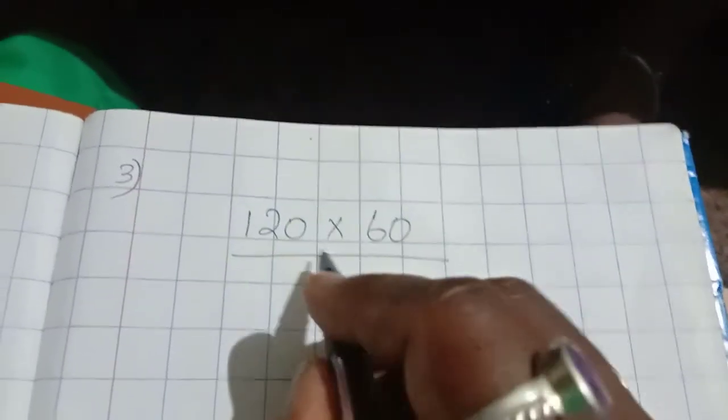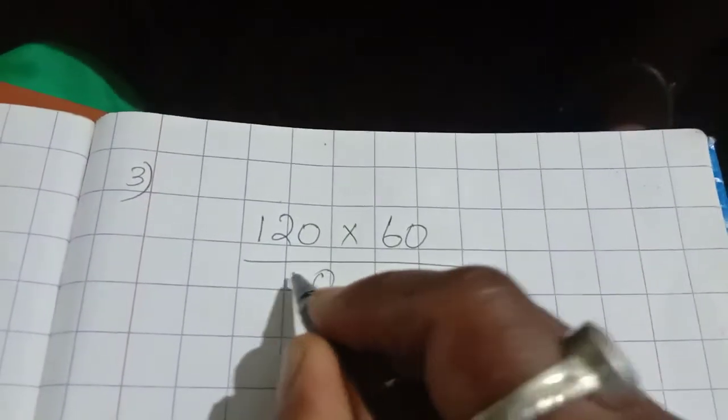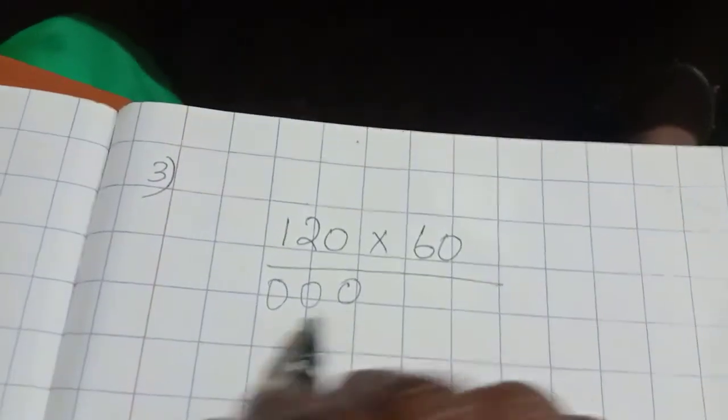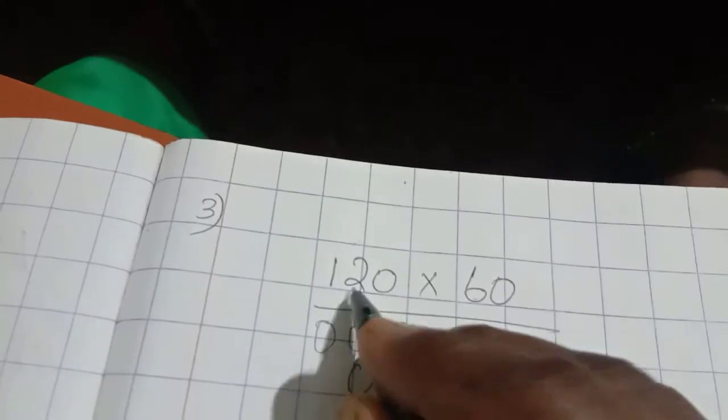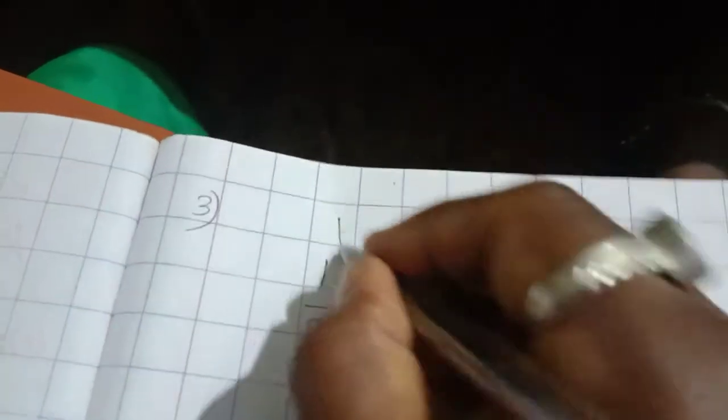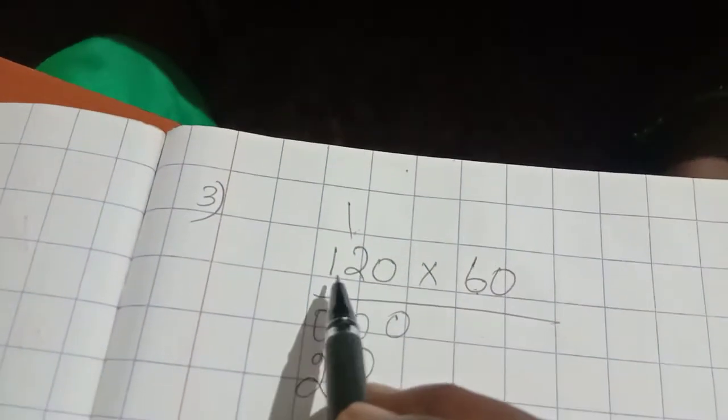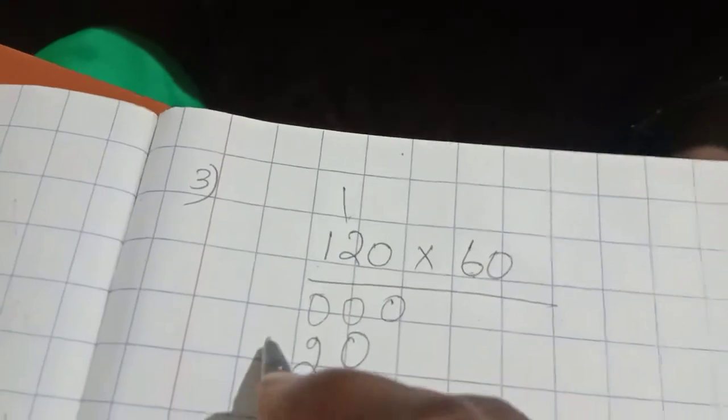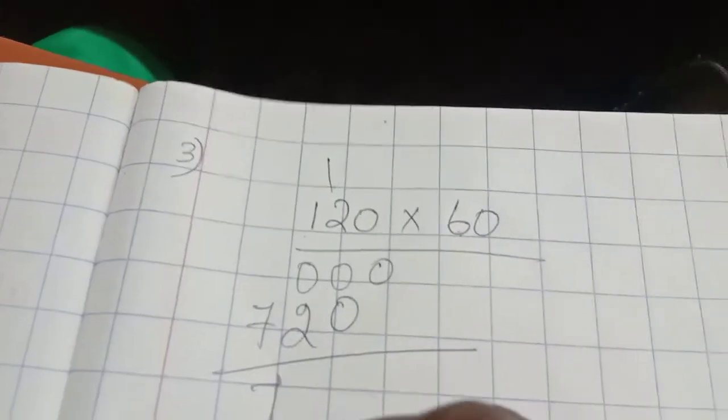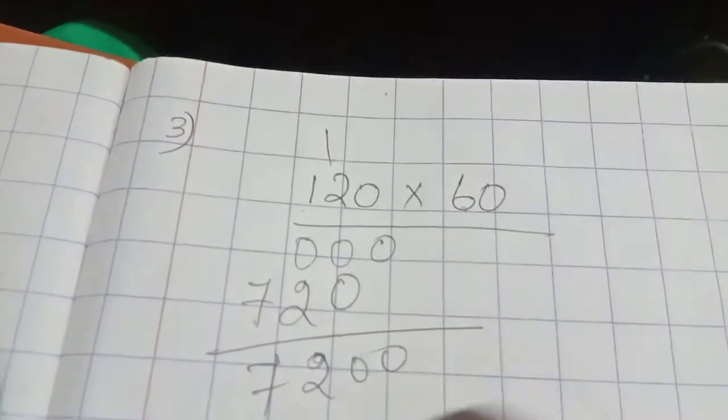If zero is multiplied by any number, the answer is zero. So I am directly writing as zero. Six zeros are zero. Six twos are twelve. So one, six ones are six plus one is seven. So the answer is seven thousand two hundred.